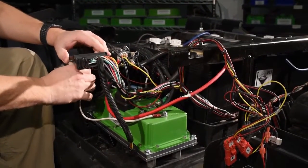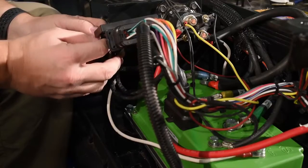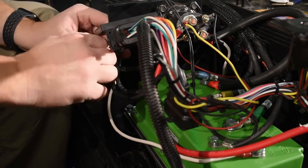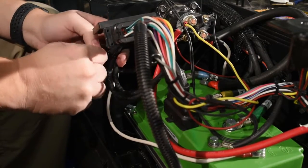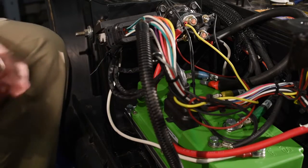Finally, zip tie this to the side of the resistor cage mount and trim off the excess.